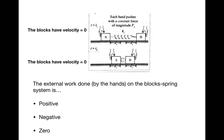Now let's go back to experiment one, which is a little more complicated. The blocks start with velocity zero and end with velocity zero. The hands push with the same constant force of magnitude F naught as the blocks move toward each other. The external work done by the hands on the block-spring system is positive — the same analysis applies. Even though there's a spring now, the hands are doing the same thing and the blocks are moving the same displacement, so the external work is still the same.